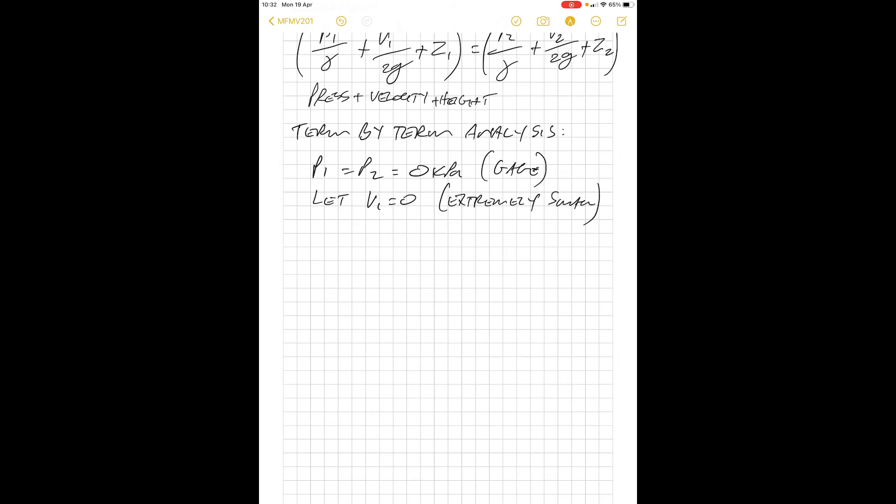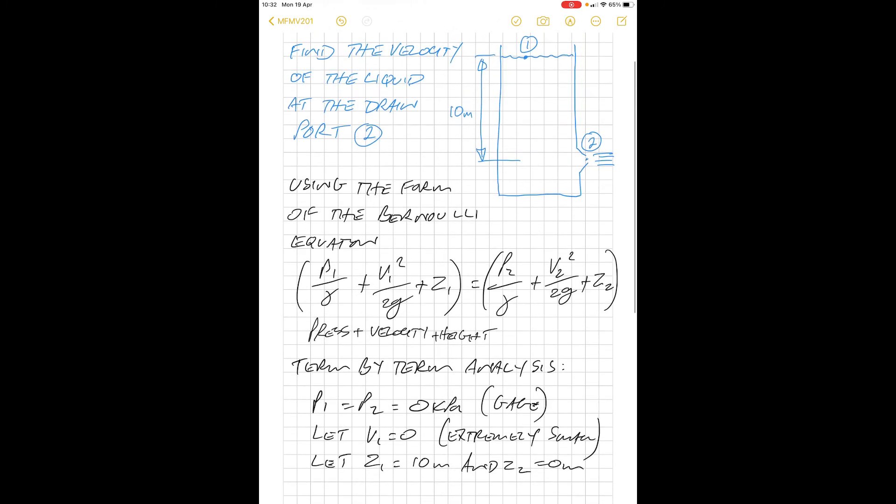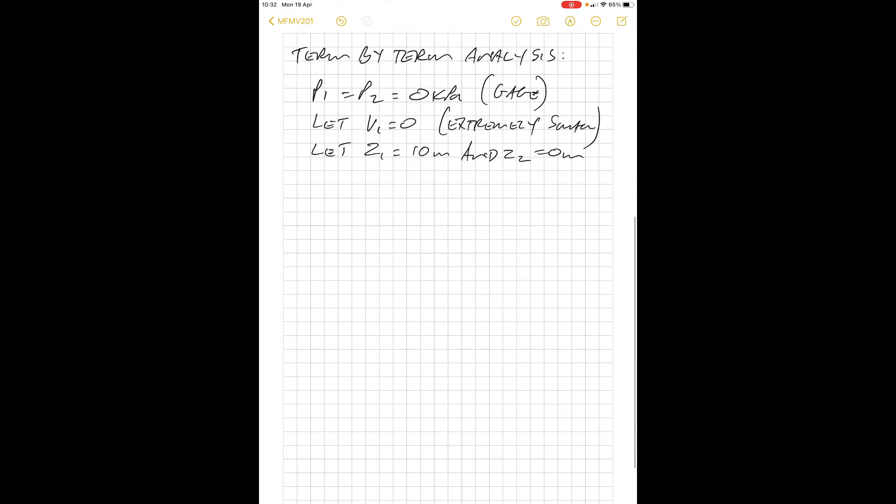Let z1 equal 10 meters and z2 equal zero meters. We're going to use point 2 as a reference, make that zero, and we can make point 1 ten meters. Now we have our terms.